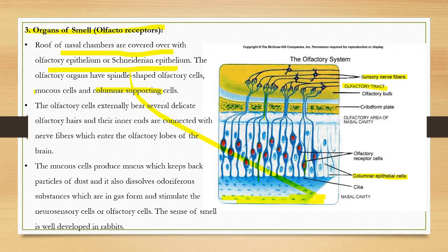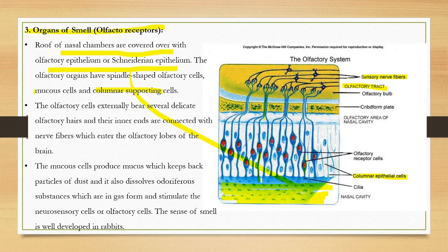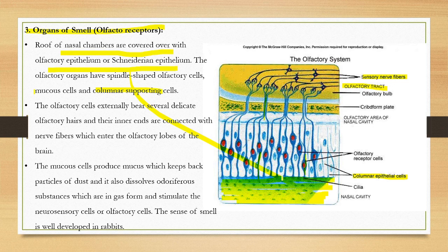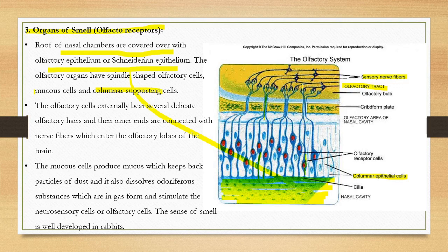This is the nasal cavity. Smell from gas dissolves in the mucus, which will stimulate the olfactory cells. These cells stimulate and create an impulse through the neurons and axons via sensory nerve fibers.